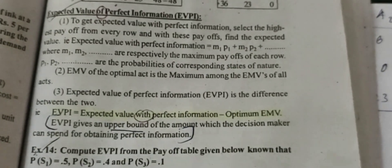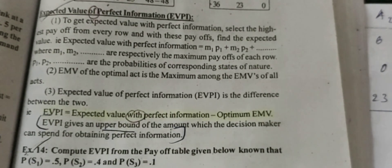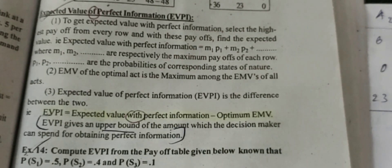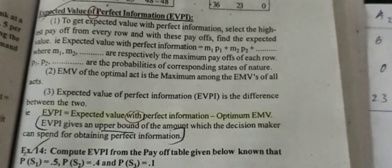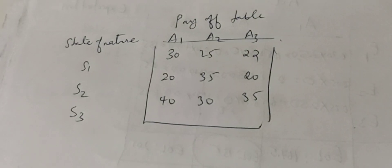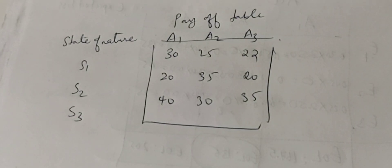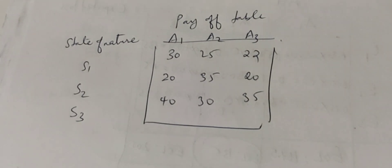Let us compute EVPI from the payoff table given below. We have three states of nature: S1, S2, and S3, with probabilities 0.5, 0.4, and 0.1 respectively. Let's look at the payoff table.